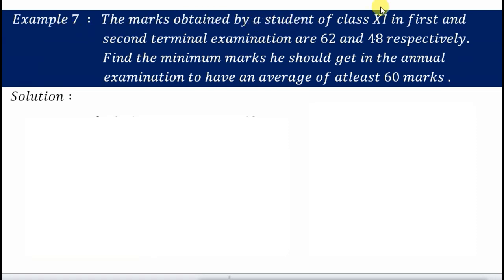The marks obtained by a student of class 11 in first and second terminal examination are 62 and 48 respectively. Find the minimum marks he should get in the annual examination to have an average of at least 60 marks.